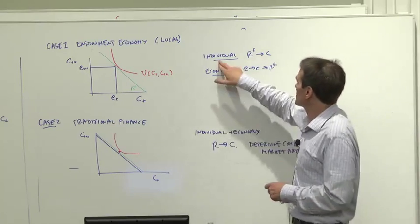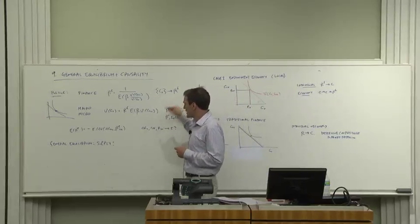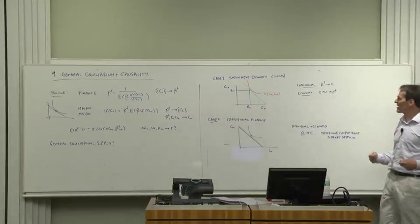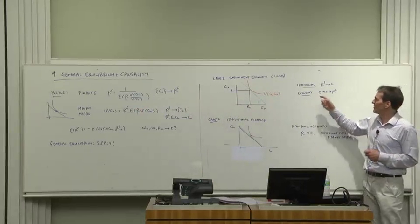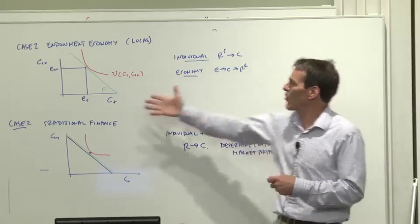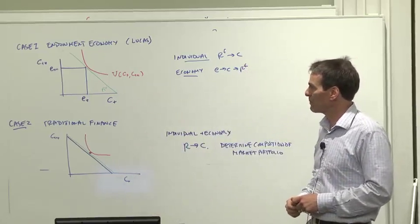So if we fill things out with the Lucas view of the supply side of the economy and the general equilibrium, though to each individual, P equals E of Mx, is in fact, they take interest rates as given and decide their consumption stream, to the aggregate economy, it's the other way around. The consumption stream is exogenous and shifts in the consumption stream will change interest rates. If more coconuts fall today, interest rates will change today.